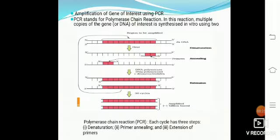In this part we have to explain about PCR. The full form of PCR is Polymerase Chain Reaction. This technique is used for amplification of a gene of interest — making multiple copies of that gene. PCR was originally invented by Kary Mullis.